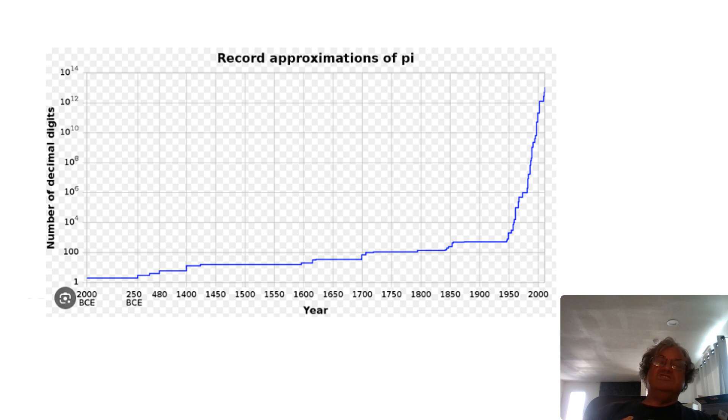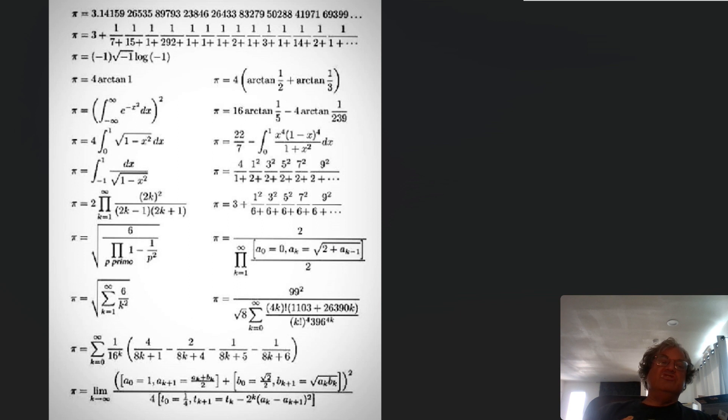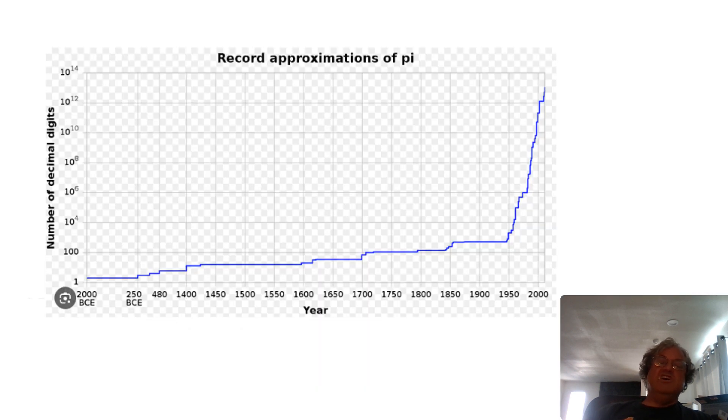Nobody needs to know that many digits. You might kind of be wondering why people even bothered calculating that many digits. Well, I think there's a few reasons for that. Let me just go back to this slide. One is it's kind of like climbing Mount Everest. Just do it because it's there, right? I think there's actually some more practical reasons. I think the most practical reason for knowing pi to like over a trillion digits, it's a good way of testing software.